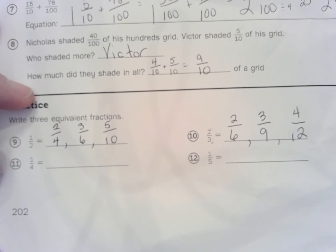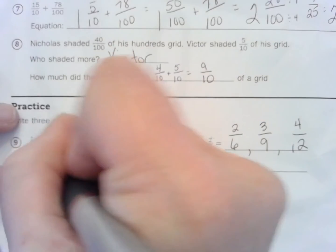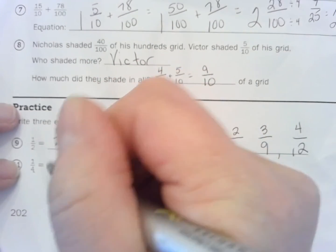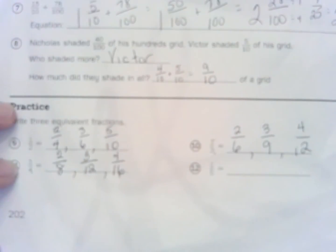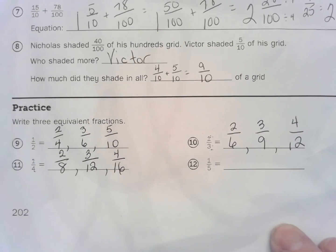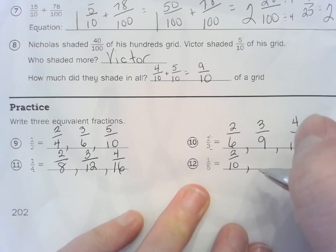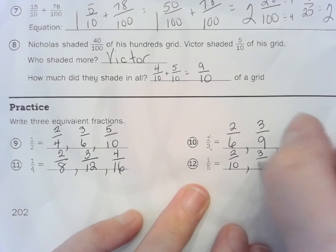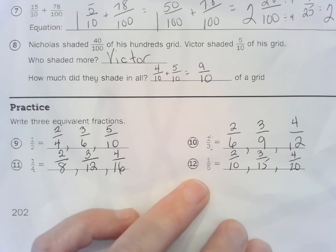That's pretty much the easiest way to get equivalent fractions. You just multiply the numerator and the denominator by the same number, and that's an equivalent fraction. So we can do the same thing here with one-fourth. One-fourth times two is two-eighths. One-fourth times three is three-twelfths. And one-fourth times four is four-sixteenths. One-fifth times two is two-tenths. One-fifth times three is three-fifteenths. And one-fifth times four is four-twentieths.